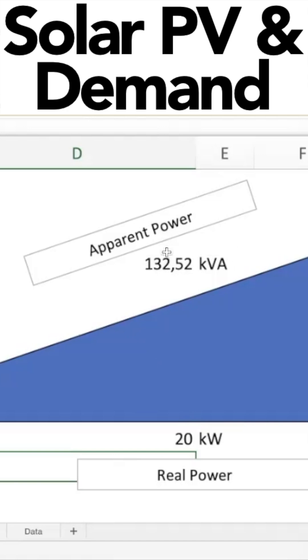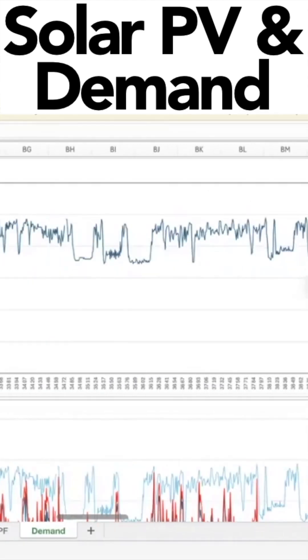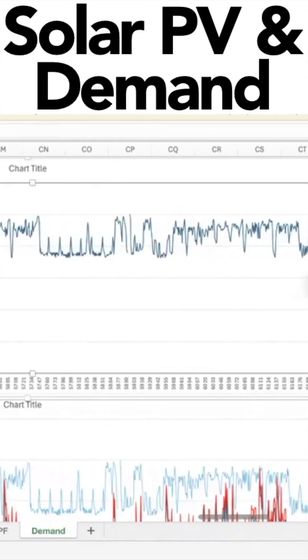Look at your demand. Your demand is still sitting at 132 KVA, even though you're only drawing 20 kilowatts from the grid. And that is because your reactive power component stays the same. So that's your reactive power for the entire year.